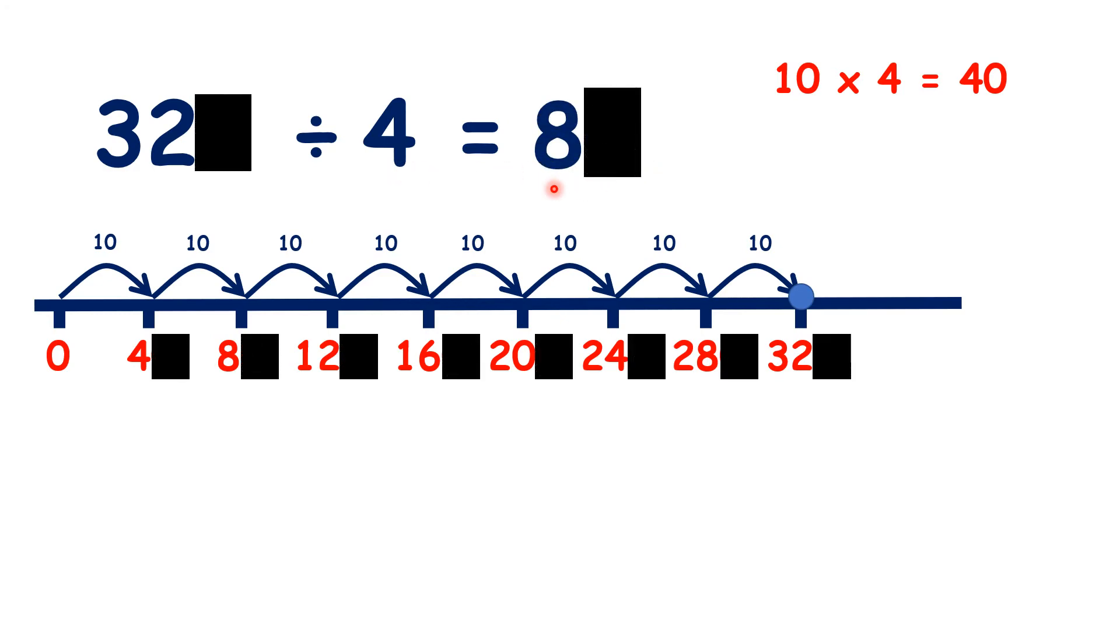And again, we can see that if we know that 32 divided by 4 is 8, then 320, that's 32 tens, divided by 4 is 8 tens. If we were sharing 32 tens into groups of 4, we would have 8 tens in each group. So 320 divided by 4 is 80.